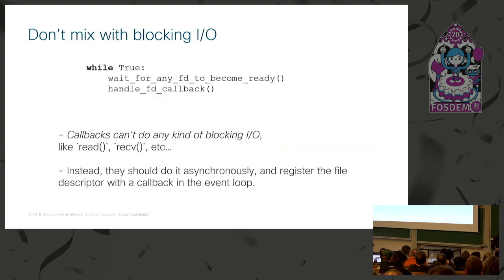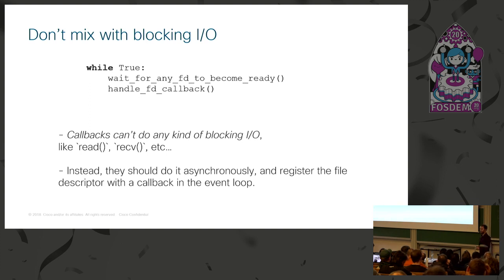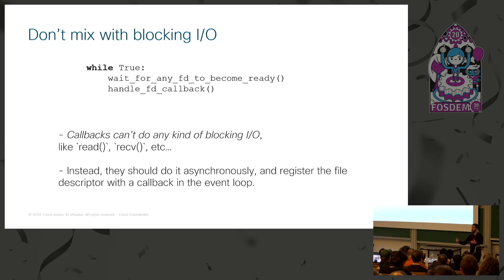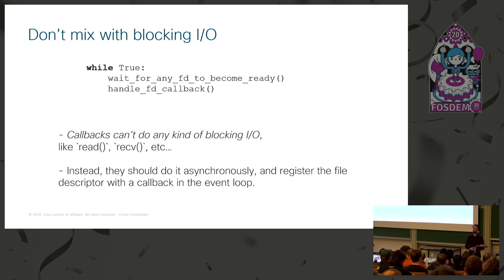One important thing: you should not mix asyncIO code with traditional blocking code. For instance, if you use the requests library for network calls — which is what many people do in Python — it will block. Your request statement will wait for the response to arrive. If you try to do that inside an event loop, your whole event loop will freeze. There are workarounds, but it's best to avoid it if you can.